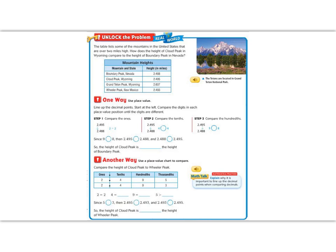So we look at this word, compare. Compare means that we're going to decide if one of them is bigger or smaller than the other one. So the first way that we can do this is by using place value. Using place value, we will line up the decimal points and start at the left and compare the digits in each place value until the digits are different.